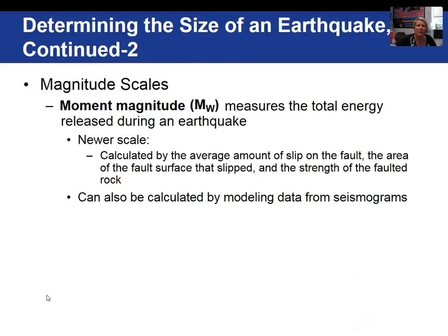The original Richter scale developed by Charles Richter in 1935 has been significantly modified due to some limitations. What we now use is called the moment magnitude, which measures the total energy released during an earthquake. It is calculated using the average amount of slip on the fault, the area of the fault surface that actually moved, and the strength of the faulted rock.